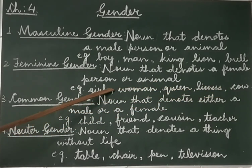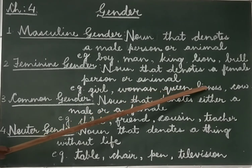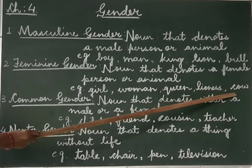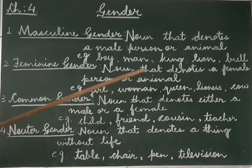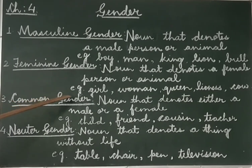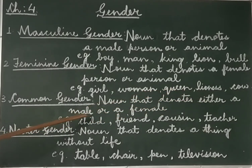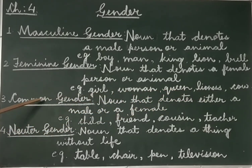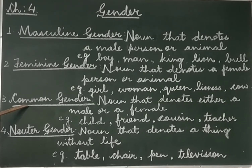They are either the names of a female person or female animal. Now the third kind of gender is common gender. A noun that denotes either a male or a female is said to be common gender — that means they are common in male as well as in female.